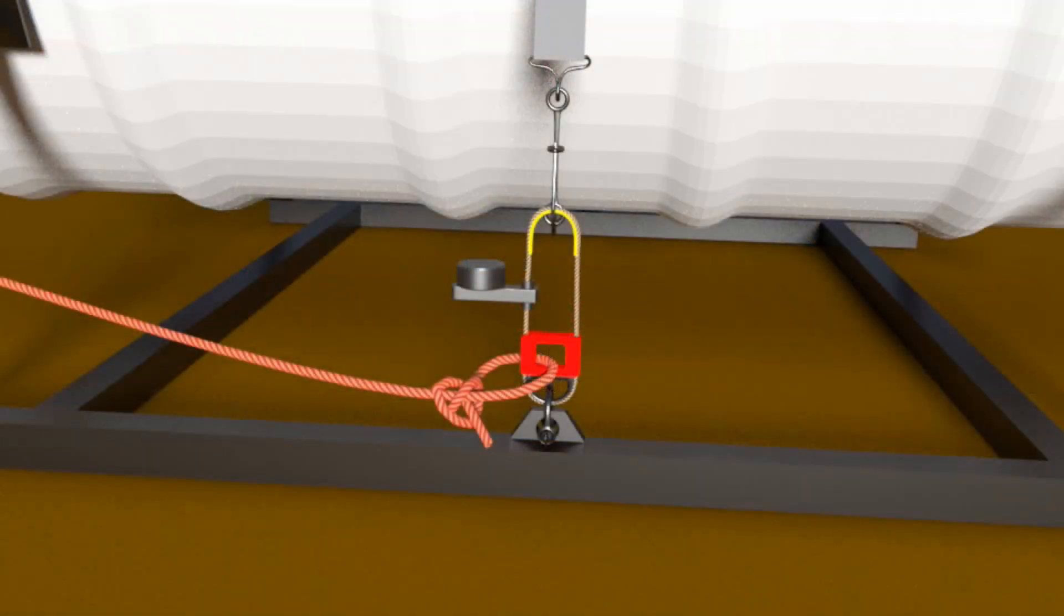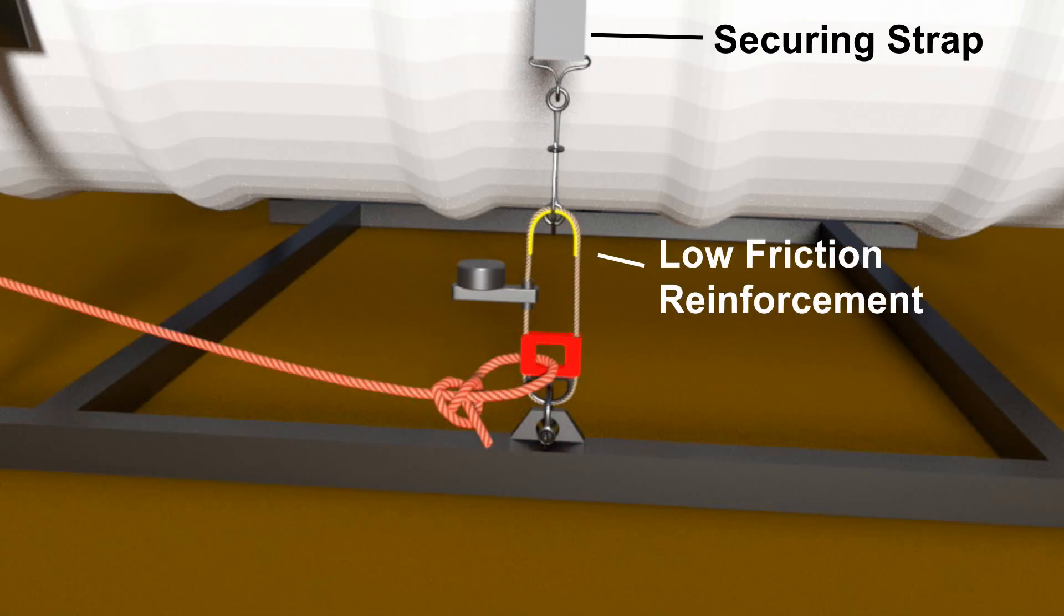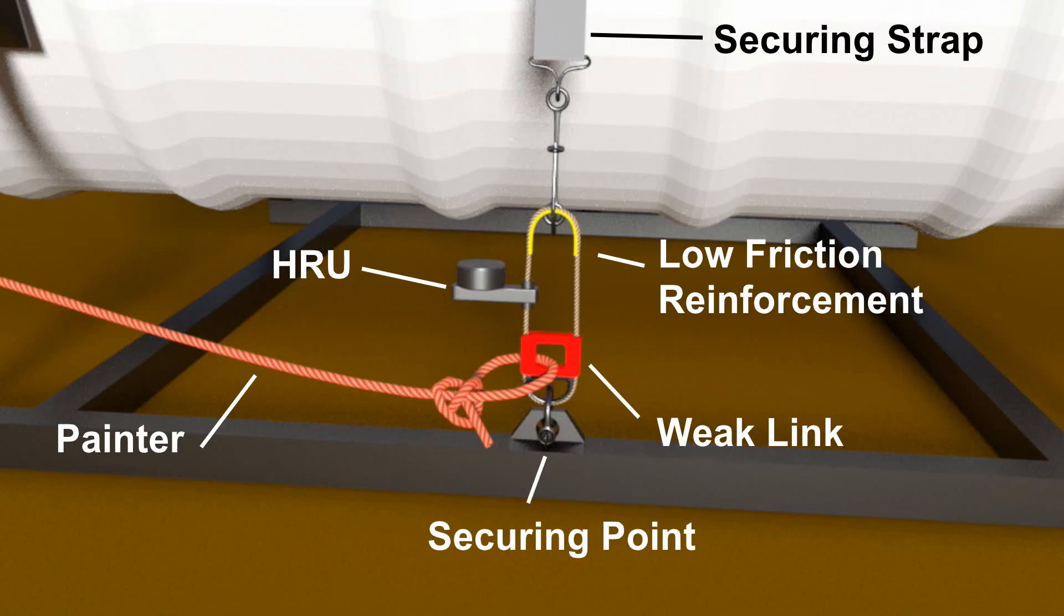Overall, we've got the main securing strap attached to the low friction reinforcement, the hydrostatic release unit which cuts the raft free, the weak link to which the painter is attached, and then finally the whole unit is secured to the deck through its securing point. So what happens when we sink?